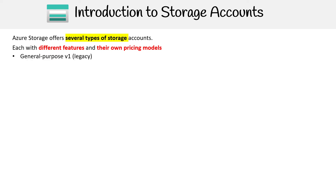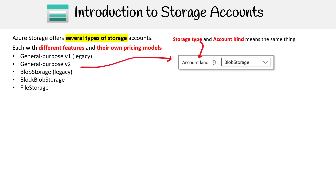We have General Purpose version one, version two, Blob Storage, Block Blob Storage, and File Storage. I want you to know that when using storage accounts, I'm saying 'storage type,' but for whatever reason the UI calls it 'account kind' — just be aware of that small discrepancy.